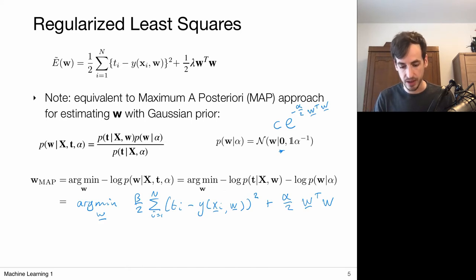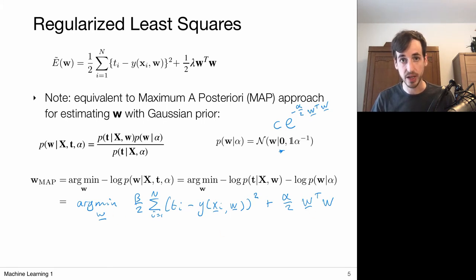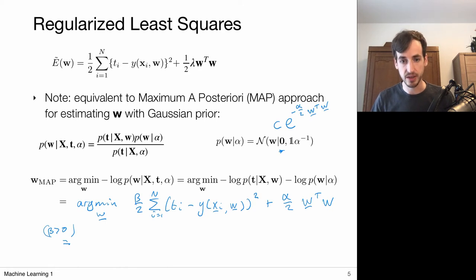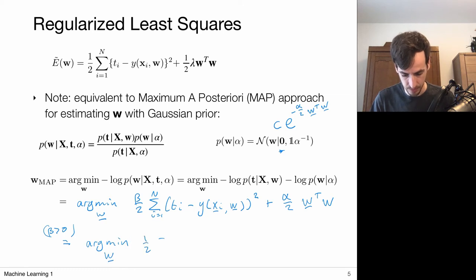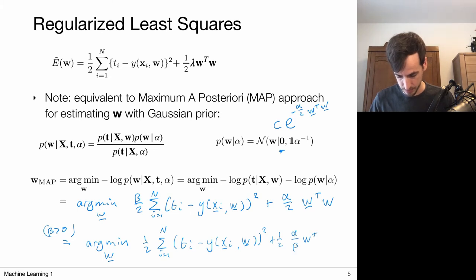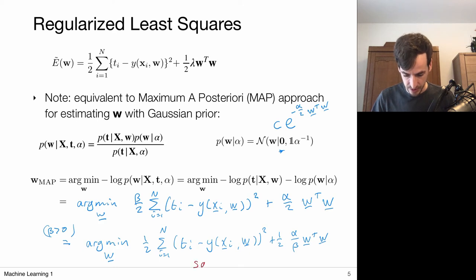This already looks a lot like the error we heuristically decided to minimize. We can write it precisely in this form by noting that the beta parameter is greater than zero, so we can divide through and put it in the right form. We see it is the same when lambda equals alpha over beta.